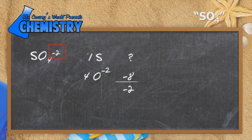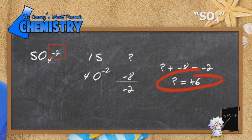Add eight to both sides and we get positive six. So the sulfur in this ion is plus six.